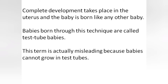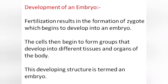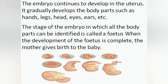Babies born through this technique are called test tube babies. This term is actually misleading because babies cannot grow in test tubes. Now we will study how development of the embryo takes place. Fertilization results in the formation of a zygote which begins to develop into an embryo. The cells begin to form groups that develop into different tissues and organs of the body. This developing structure is termed an embryo. The embryo continues to develop in the uterus and gradually develops body parts such as hands, legs, head, eyes and ears.